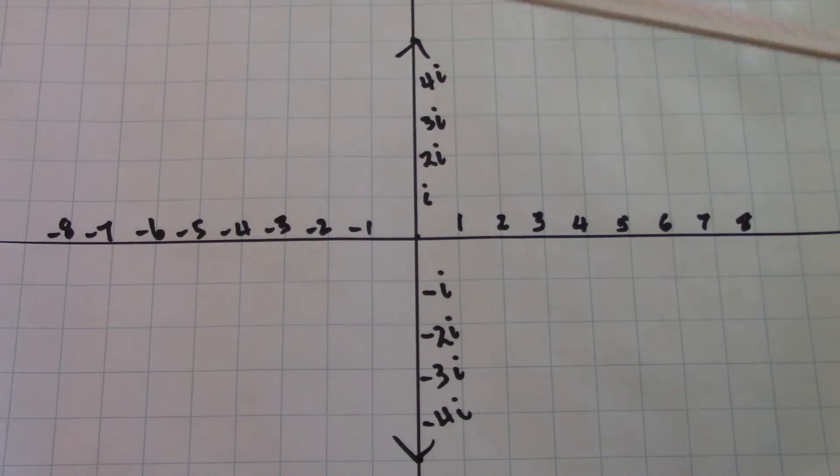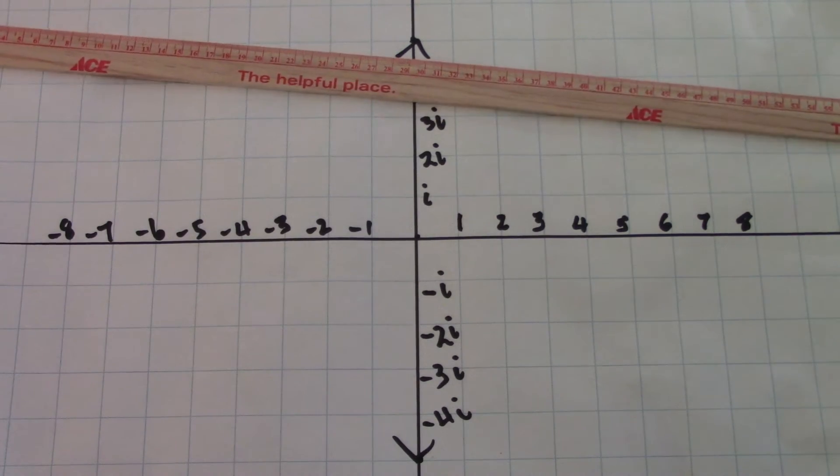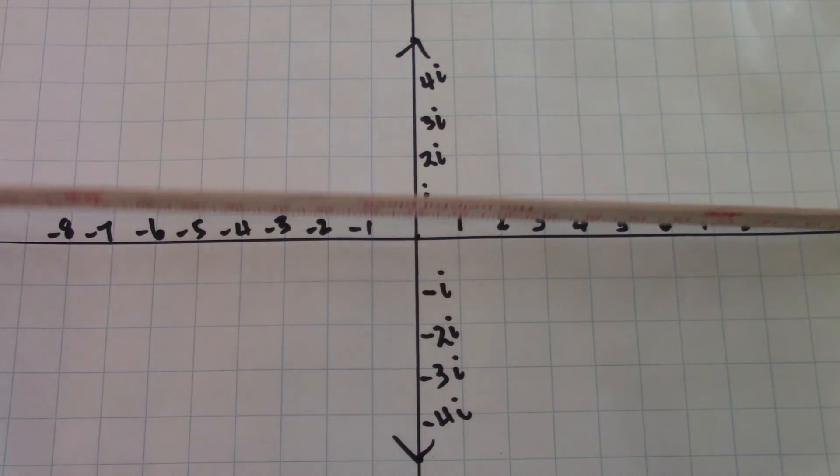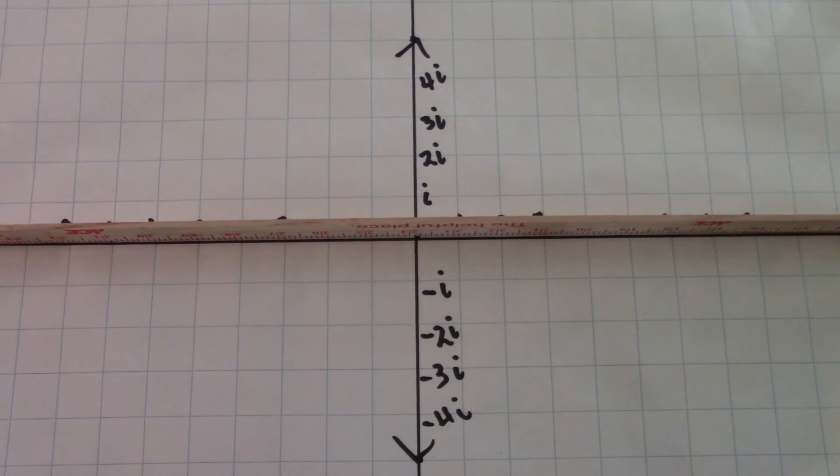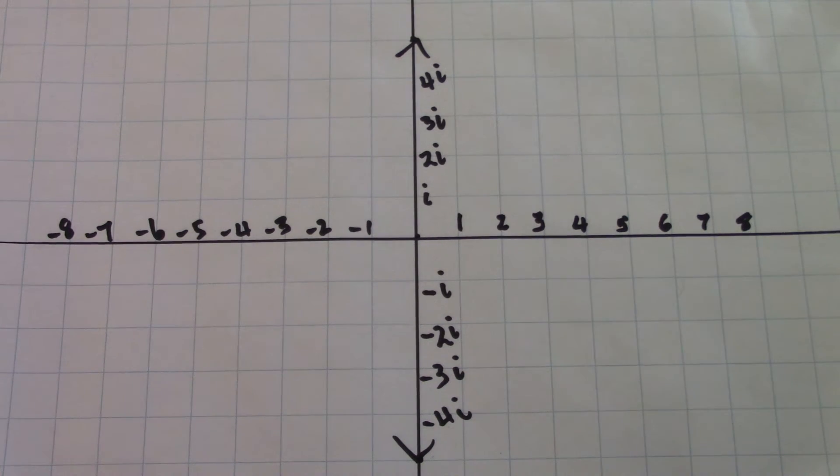So when I think of numbers, I think of numbers as being two-dimensional. I only think of real numbers as having one dimension, that is, having length, but the complex numbers lie on a plane.